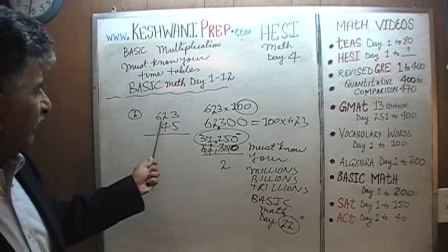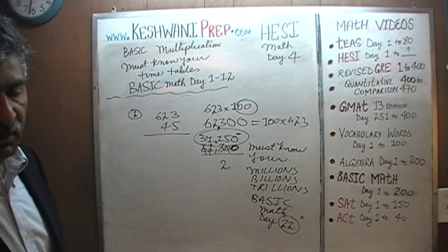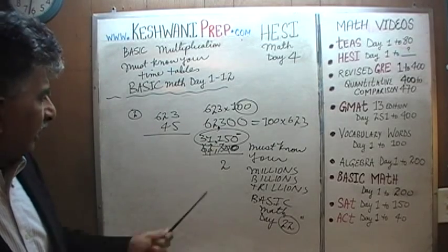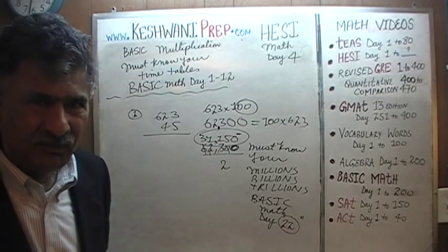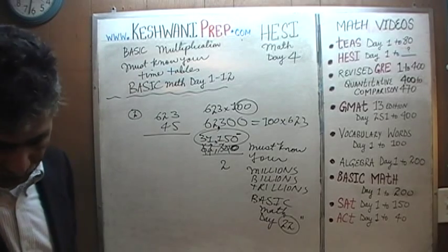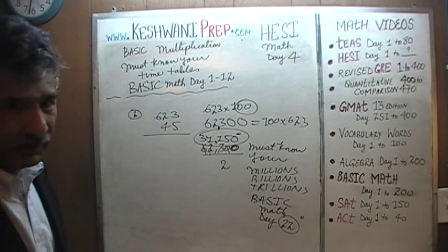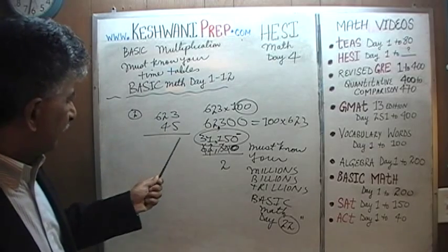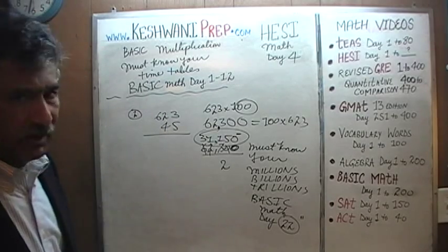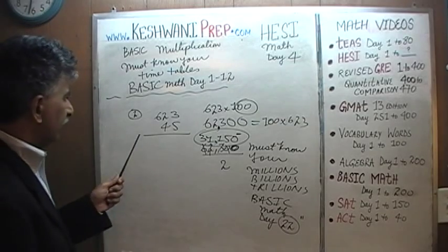We only have forty-five of them, not fifty, so we have to take away five times six hundred and twenty-three. Six hundred times five is three thousand. So it's going to be around twenty-eight thousand — thirty-one thousand minus three thousand is around twenty-eight thousand. Let's do it out.